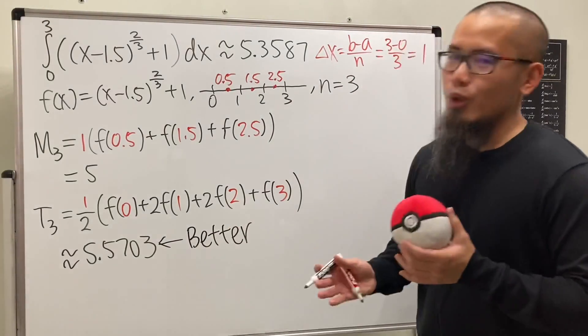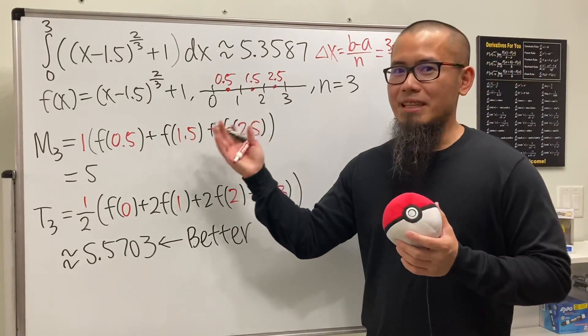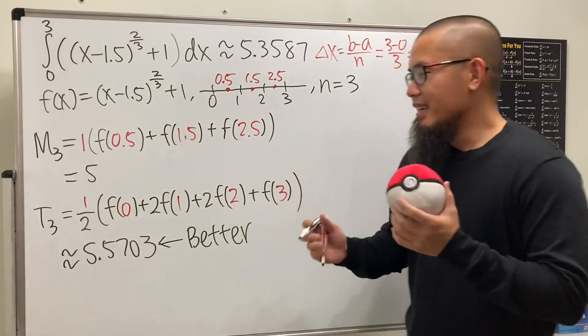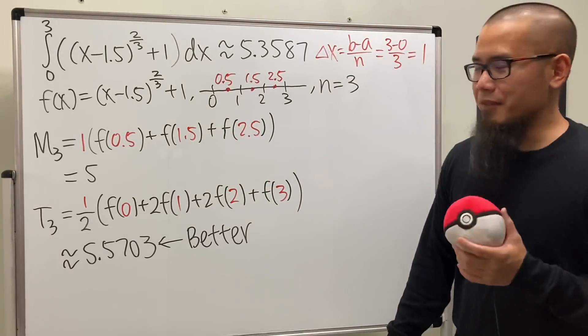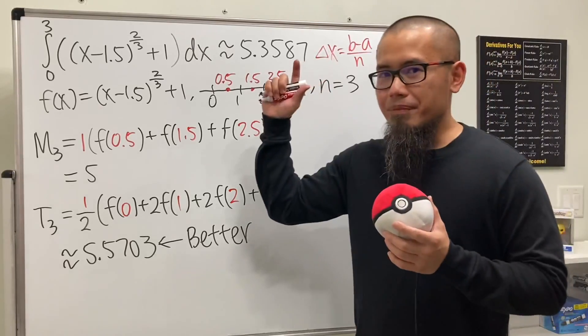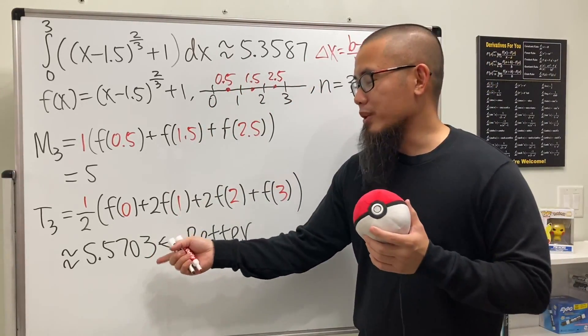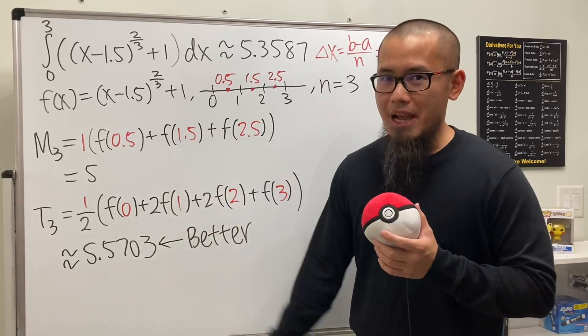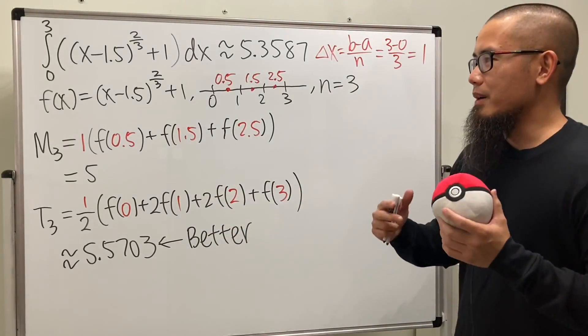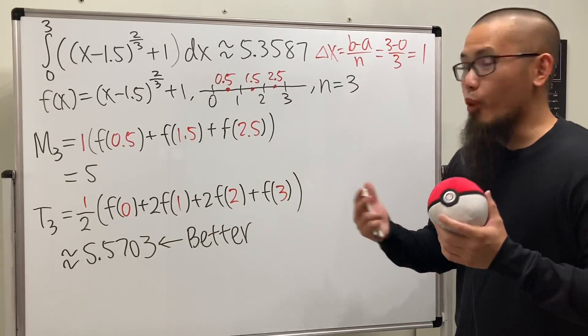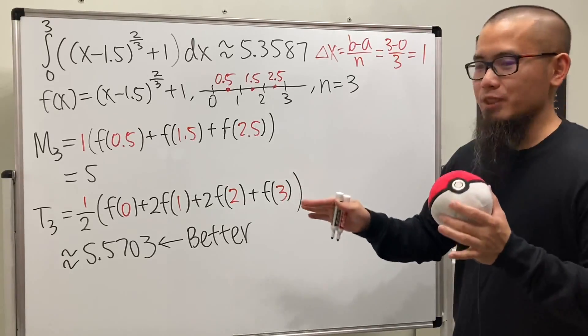Have a look—which one is better? This right here is better! Oh my god, let me tell you, it took me so long to come up with this example on my own. I was so happy that I finally found an example where the trapezoidal rule is actually better than the midpoint rule.